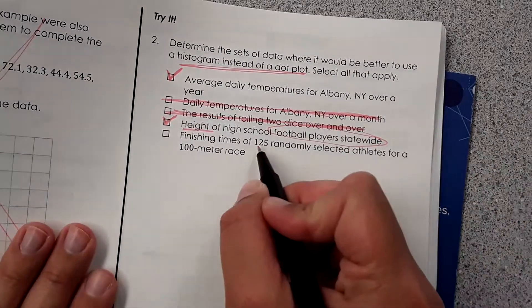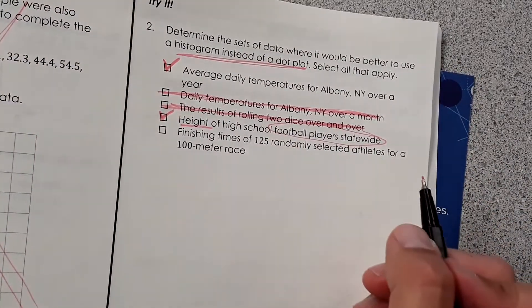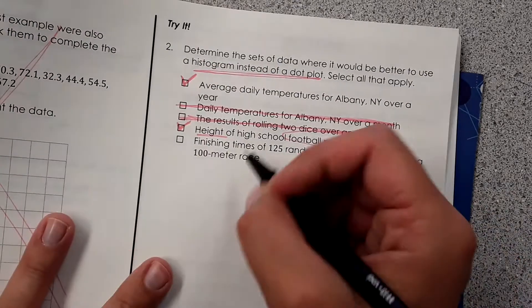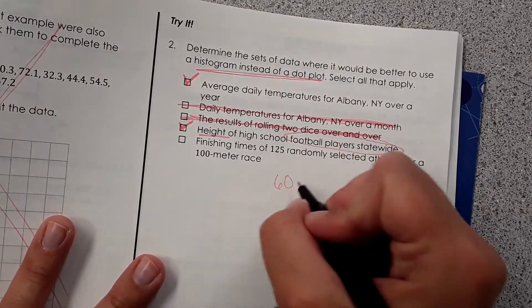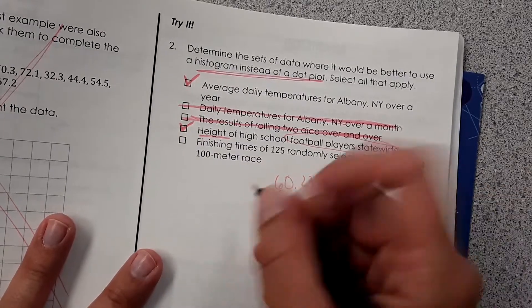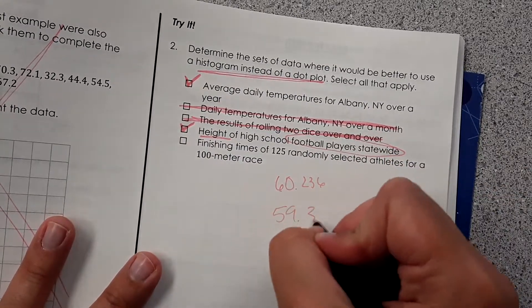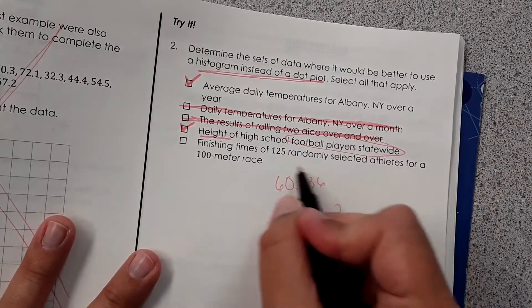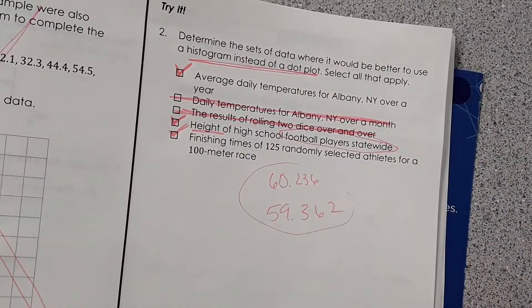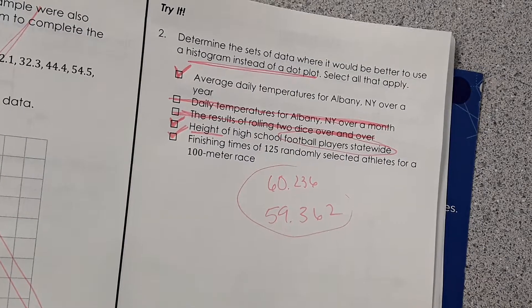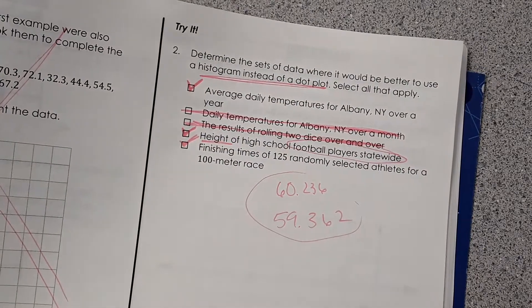And then finishing times of 125 randomly selected athletes for 100 meter race. If you've ever looked at finishing times for a race, it would be like 60.236 seconds and 59.362. So these would be better in a histogram. So anything that's complicated goes in a histogram? Yep. Because you can simplify it with just the bar graph.